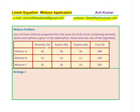Almonds, raisins, and cashews are mixed in different quantities and their cost is given. With 10 pounds of almonds, 26 pounds of raisins, and 16 pounds of cashews, the mixture costs $380. When the ratio is 15, 32, 12, the cost is $420. When mixed in the ratio 20, 36, 14, the cost is $502. The cost is in dollars per pound. You need to find the cost of each ingredient: almonds, raisins, and cashews.